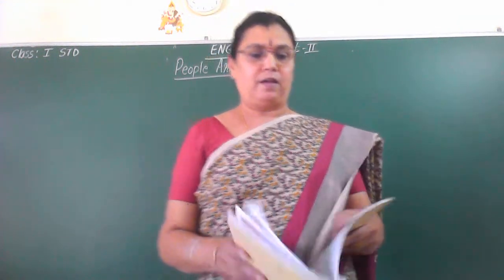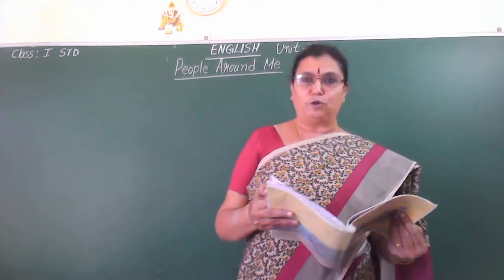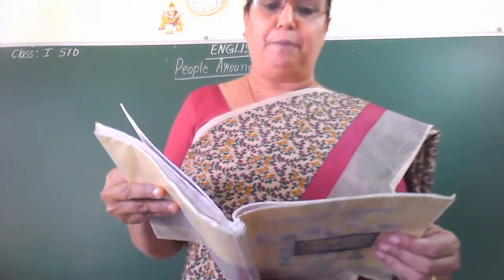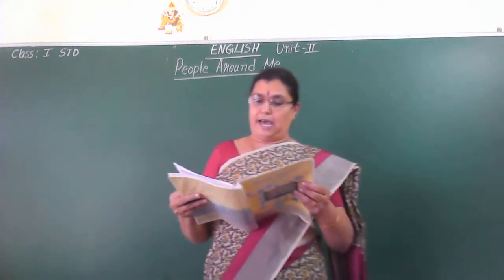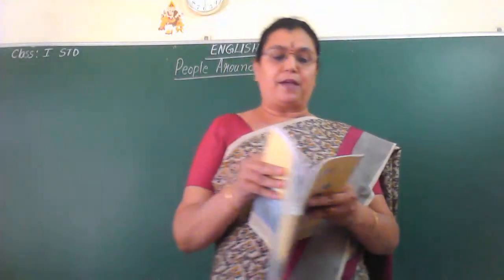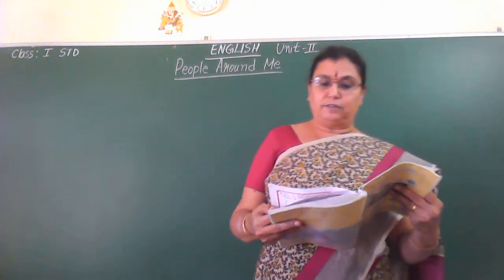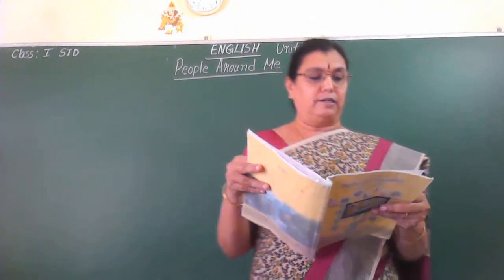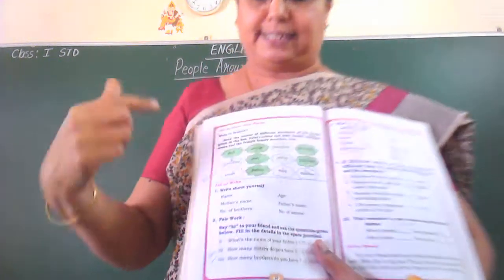Good morning children. Today we are going to continue — first chapter is over. Second chapter is 'People Around Me.' In that we learnt about the family members, and I told you to colour the eggs given in the basket. I hope you have coloured it. We also learnt true or false, and today we are going to learn about colouring male and female. In the last class I told you to colour — hope you have coloured it.